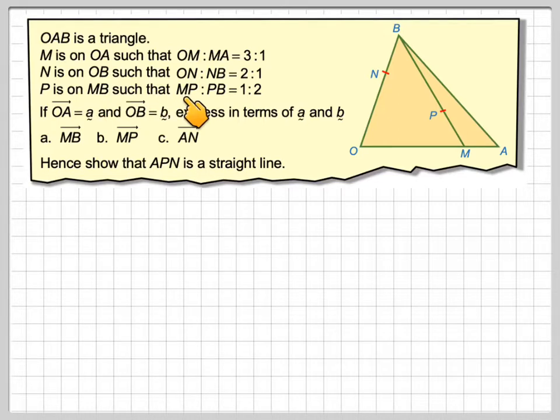N is on OB such that ON to NB is 2 to 1, and P is on MB such that the ratio MP to PB is 1 to 2.